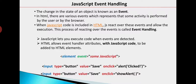We don't want to handle all events — only the events we are interested in. When an event occurs and we want to handle it, we will write JavaScript code. This is what is called event handling: whenever an event occurs we have to take action, and that action will be coded in JavaScript. When JavaScript coding is included in HTML, it reacts to these events and allows their execution.